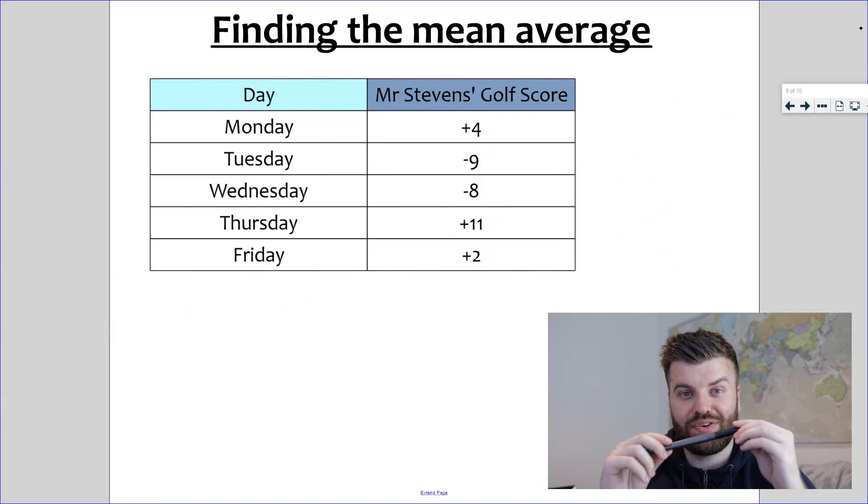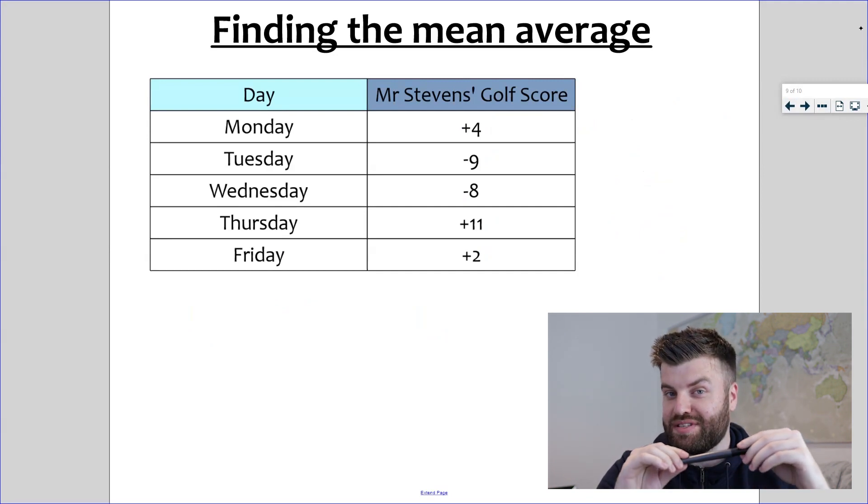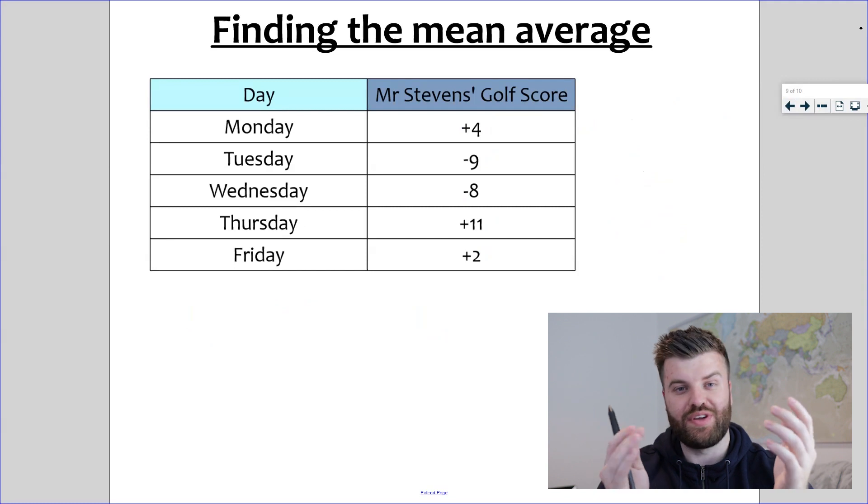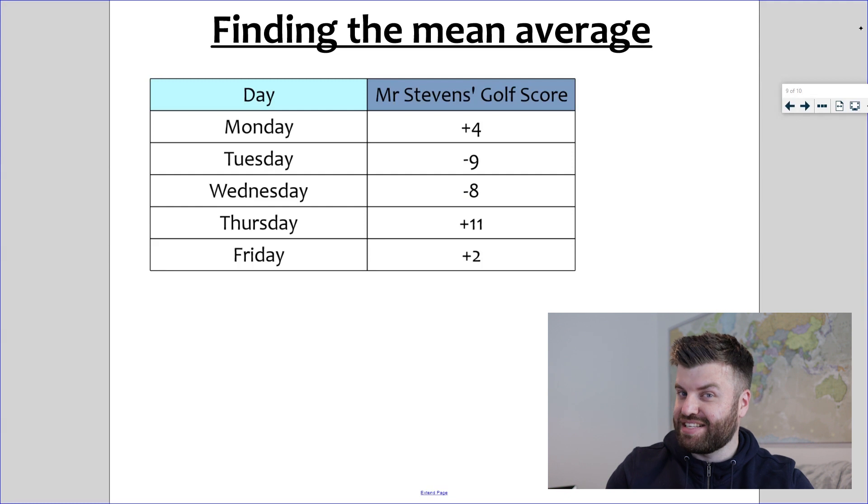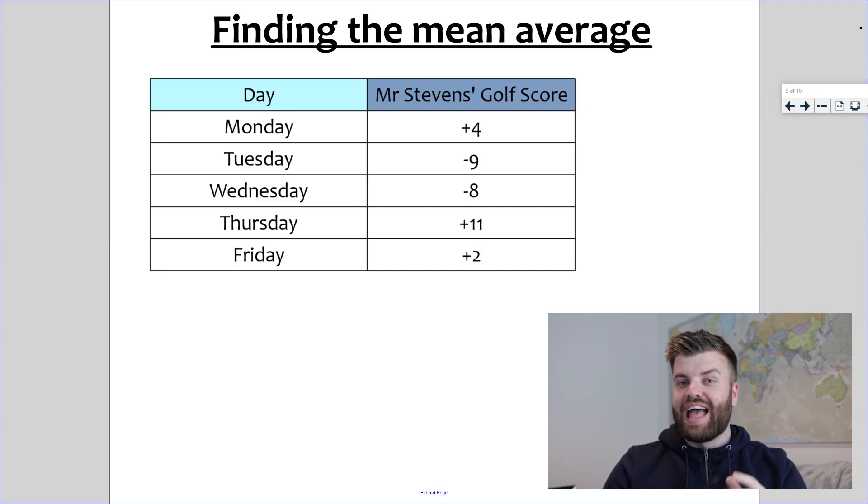Now you have the code, you can crack any mean average for any set of data. And I've given you an easy one to have a go at. So on the screen you've got another table. This one is Mr. Stevens's golf score. Now with the game of golf you can go above par or below par, which generates positive numbers and negative numbers. What I need you to do is leave me a comment down below and tell me what was the mean average of Mr. Stevens's five golf rounds that week. I'm not going to tell you what to do. Click back in the video if you want to rewatch for some help.